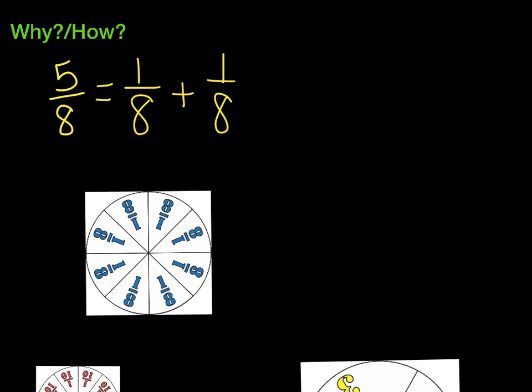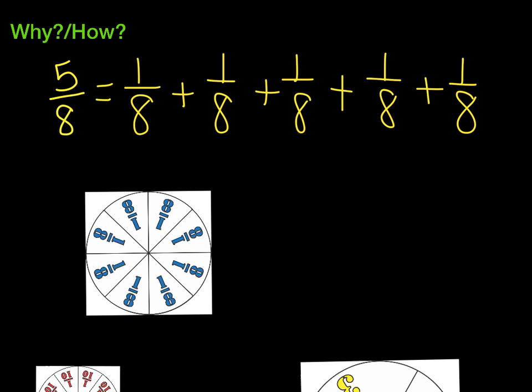So let's say that we have the fraction 5 8ths. If I use my 8ths fraction circle, how many of those pieces would be equal to 5 8ths? Hopefully you said 5. So I could decompose this fraction by doing 1 8th plus 1 8th plus 1 8th plus 1 8th plus 1 8th — that would be equal to 5 8ths. We just basically took that fraction apart to show you what that fraction was made of.